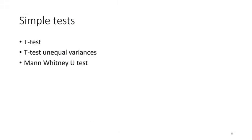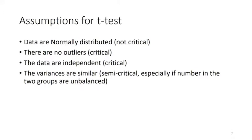The simple tests are basically the t-test, the t-test with unequal variances, or the Mann-Whitney U test. The assumptions for the t-test are: first, the data are normally distributed — but that's not particularly critical. The t-test is remarkably robust because of the central limit theorem, so you can get away with quite odd-looking distributions and still get a valid p-value. The other assumption is there are no outliers — that's pretty critical, and it's one reason why we do the eyeball test. The data must also be independent — that's very critical and you can't test it using a graph.